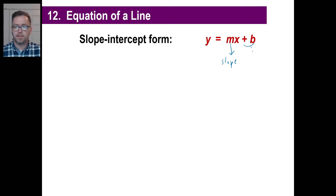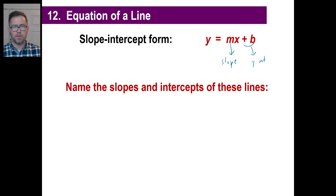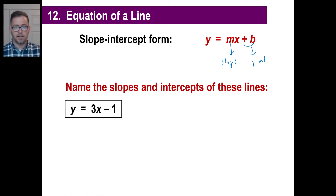This is the y-intercept. That number tells you where the line crosses the y-axis, the vertical axis. Make sure you know that when you see an equation of a line. Let's do a couple of these, for example — give me the slope and the y-intercept of these lines.